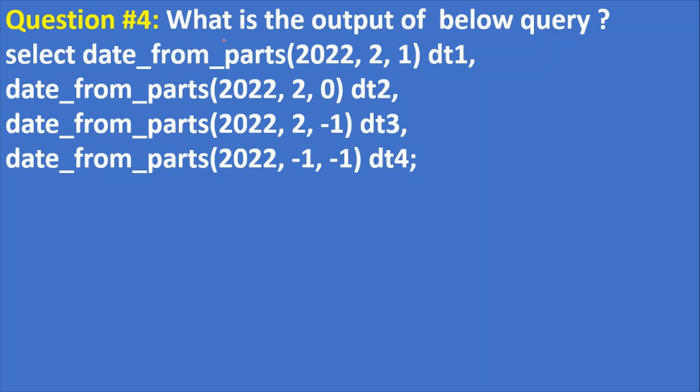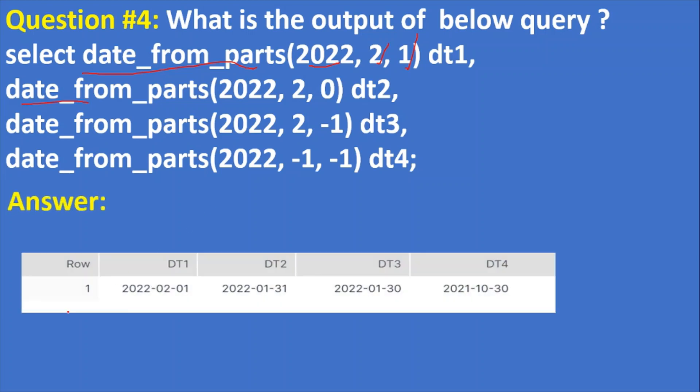Next question: what is the output of below query? Select date_from_parts - this is the year, month, and day of the month. Like that we have four different dates. So this date_from_parts creates a date from individual numeric components that represent the year, month, and date of the month. The answer is here: this is date one first column, date two, date three, date four. For date one we have a correct one as expected: 2022 February first.